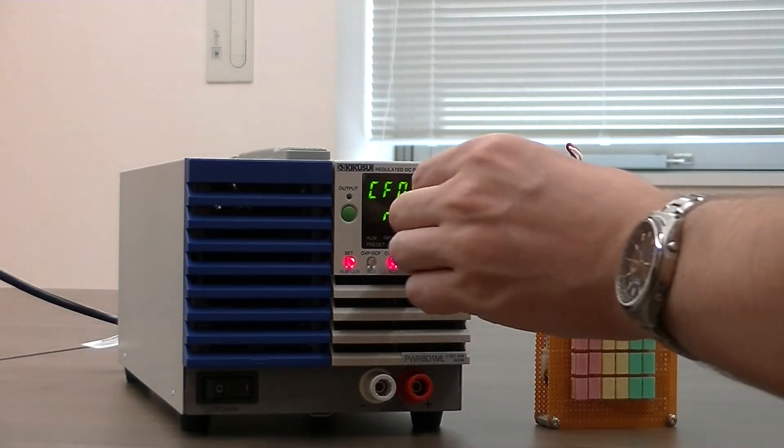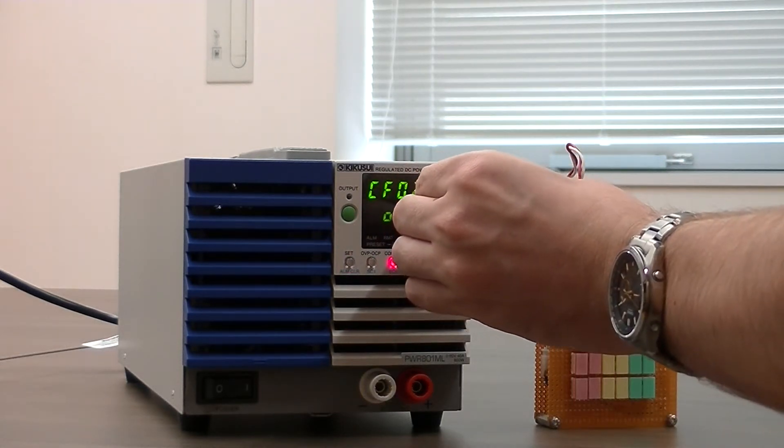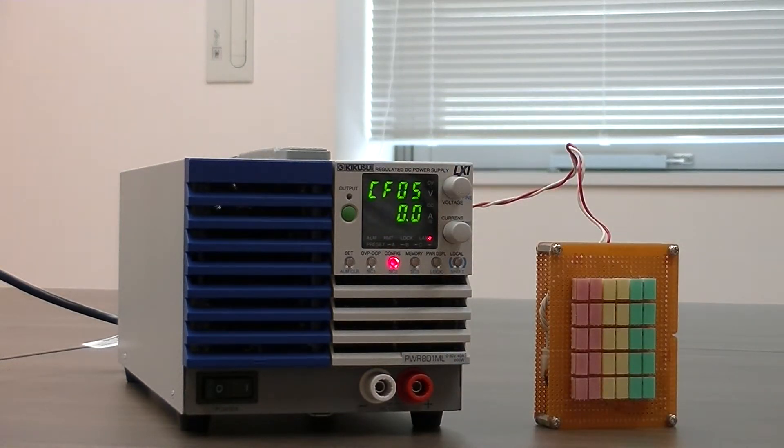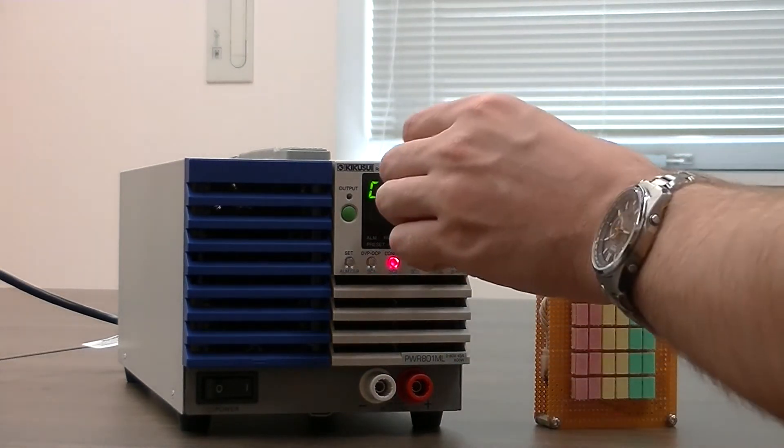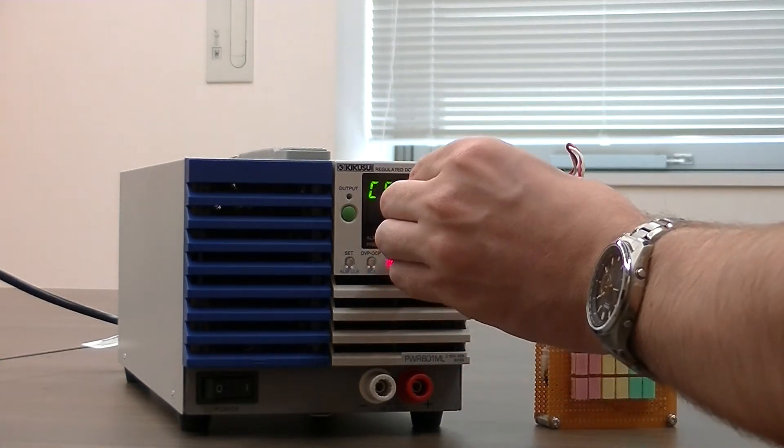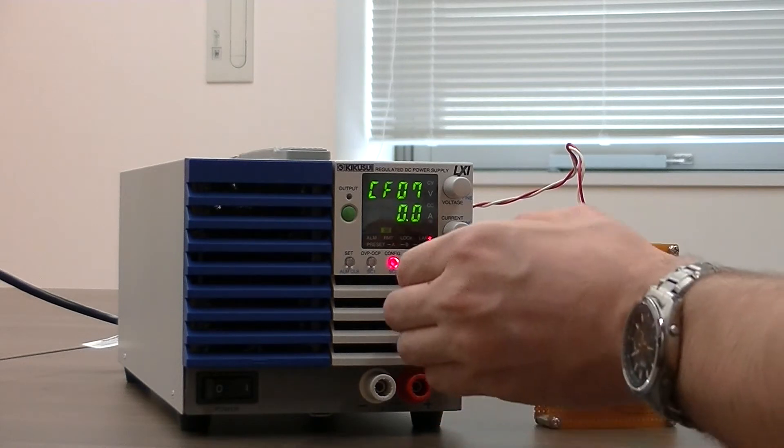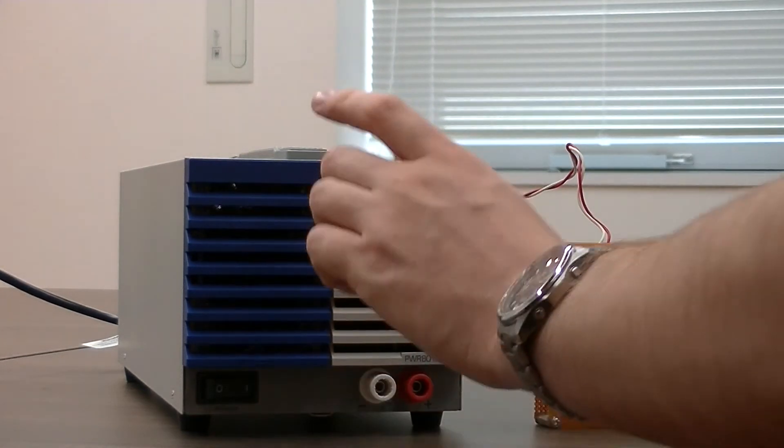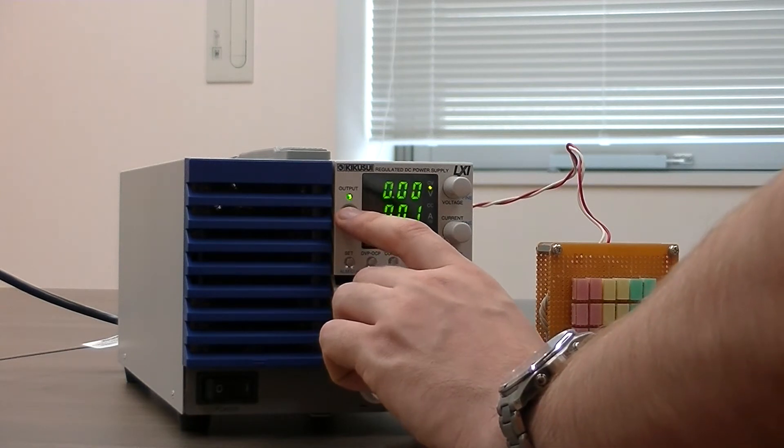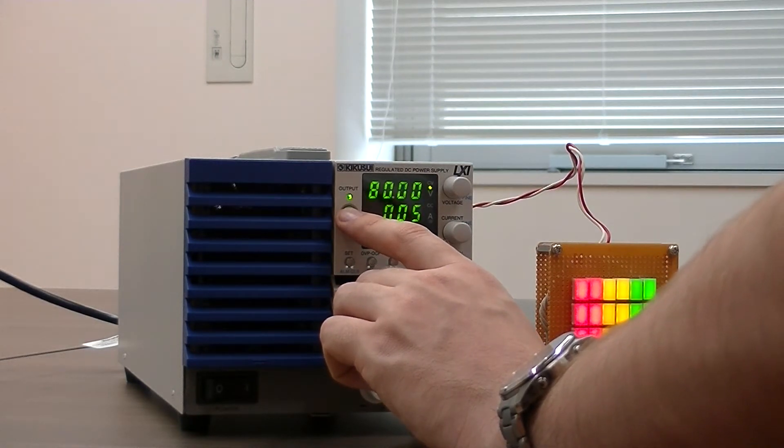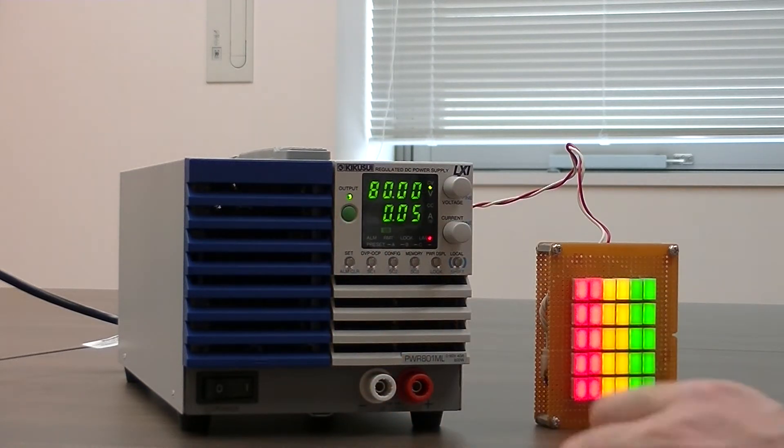Let's skip over to CF06 and CF07 to access the soft start stop time in CV mode, setting the start time to 3 seconds and the stop time to 3 seconds as well. As you can see, when I press the output button, the LED light is slowly fed current with little to no inrush current that could possibly damage the device.